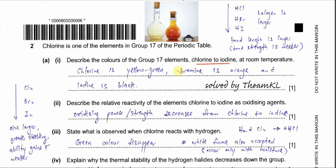For chlorine, we know that it is a gas — it's a yellow-green gas. For bromine, it's a liquid, so it's a brown color. And iodine is a solid — it's a black solid.